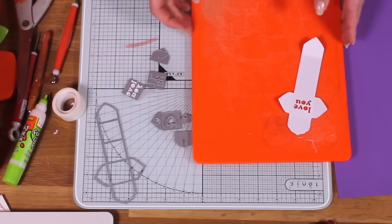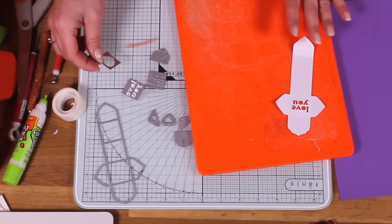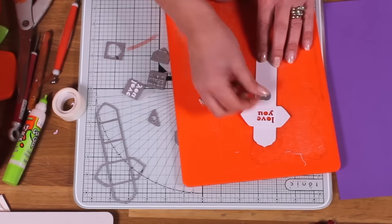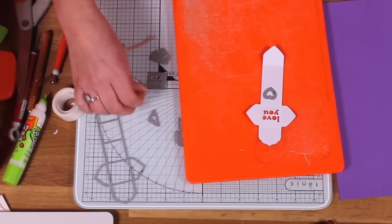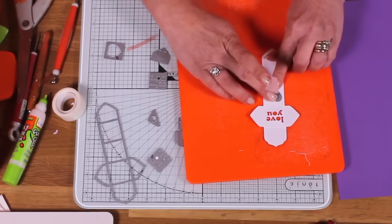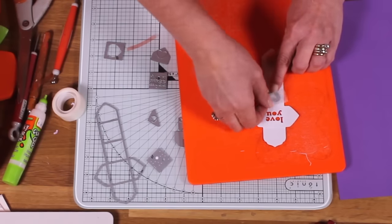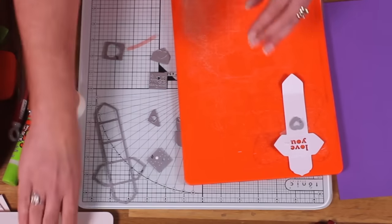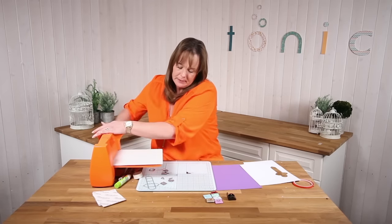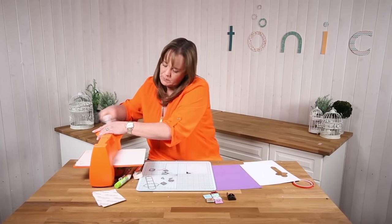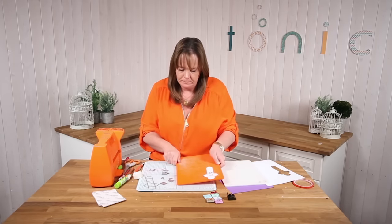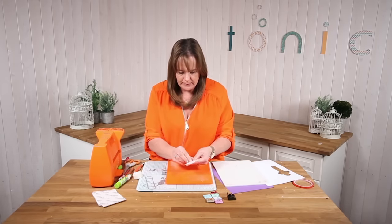Then I want to have, what shall I have? I'm going to have a little love heart next, I think, because I can. So let's cut that one out as well. Let's have it dead central in there. So let's cut that out. All the way through. So that's that one.